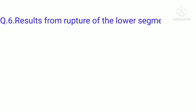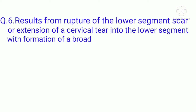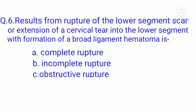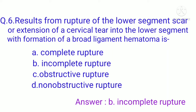Question 6: Which condition results from rupture of the lower segment scar or extension of a cervical tear into the lower segment with formation of a broad ligament hematoma? Option A: complete rupture, Option B: incomplete rupture, Option C: obstructive rupture, Option D: non-obstructive rupture. The correct option is B, incomplete rupture.